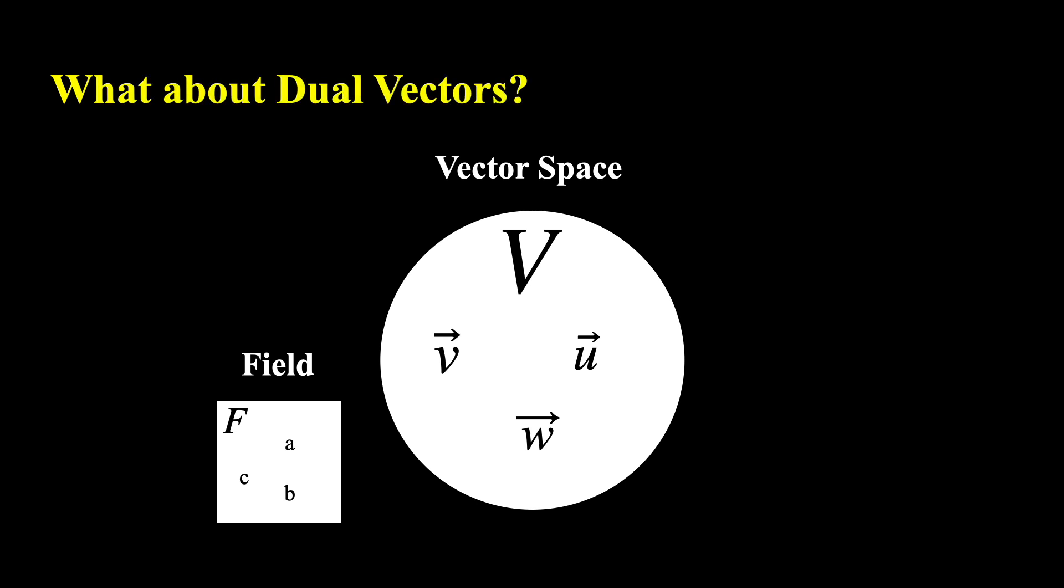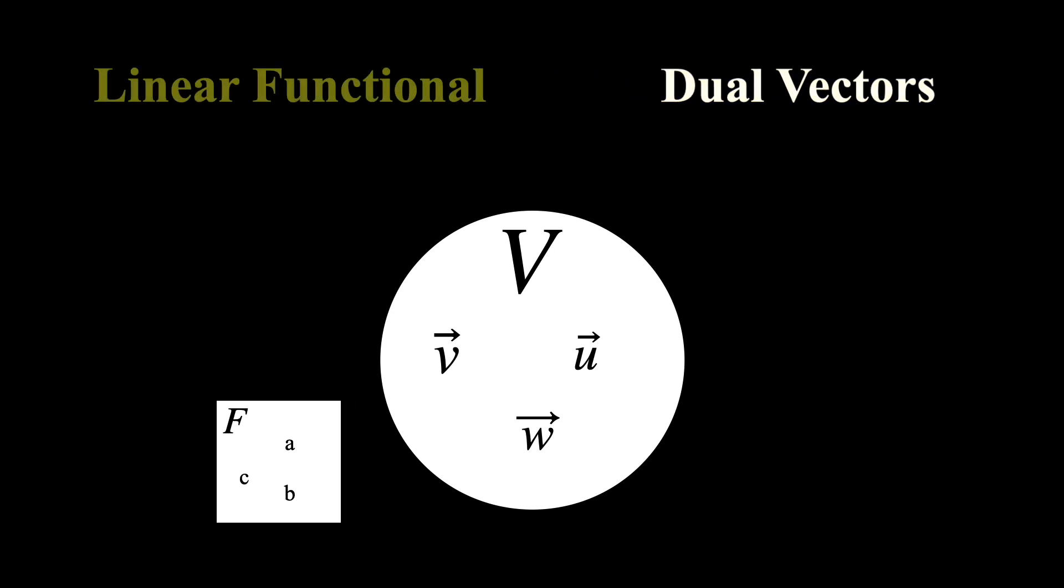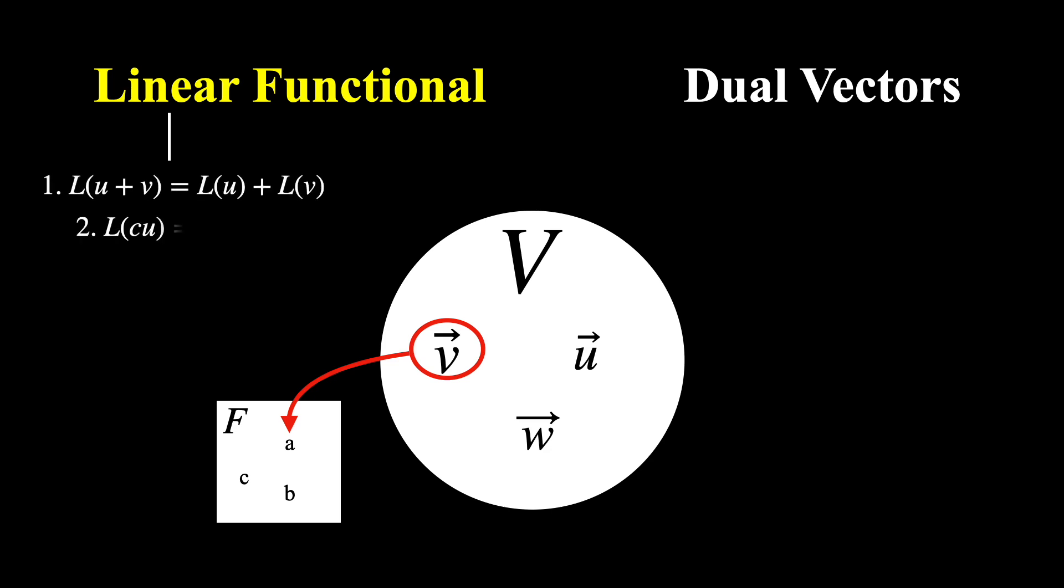But what about dual vectors? What exactly are they? In order to understand what dual vectors are, we need to introduce something called a linear functional. A linear functional is a map that takes in one vector and maps it to an element in the underlying field. And when it does this, it must satisfy the two properties of being linear.